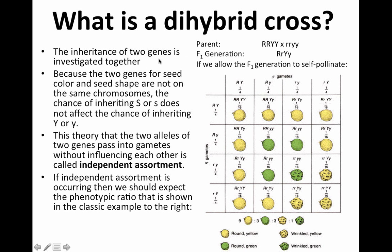A dihybrid cross is when you investigate two genes being inherited together. Because the two genes are not on the same chromosome, the chance of inheriting one does not affect the chance of inheriting the other. This is called independent assortment — Mendel's second law — the idea that these two genes do not affect each other, so all possible outcomes are equally likely. All of the predicted Punnett square ratios assume that we are following Mendel's law, and the two genes — in this case, color and shape — are actually assorting independently. Therefore, they are on different chromosomes.